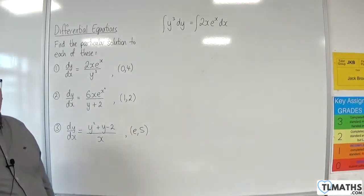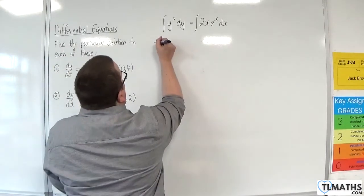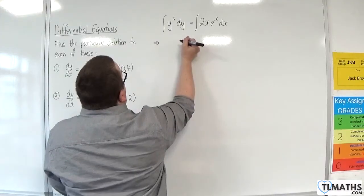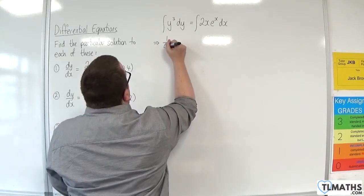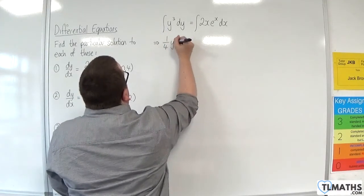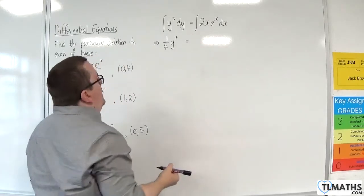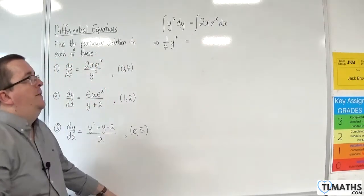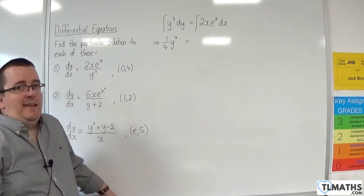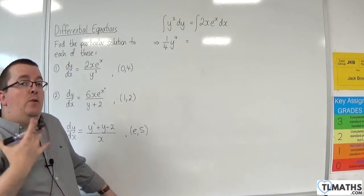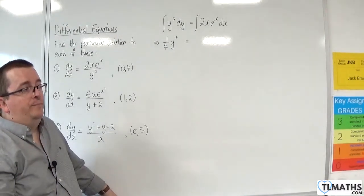Now the left-hand side is quite easy to integrate — just add 1 to the power, divide by the new power, so 1 quarter y to the 4. The right-hand side, however, I've got 2x e to the x, so I'd have to use integration by parts to do that.